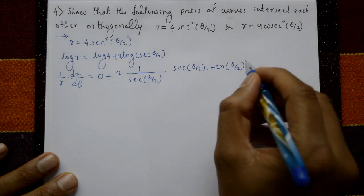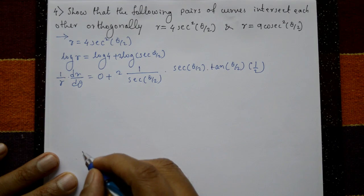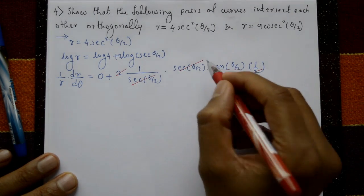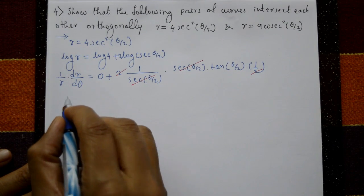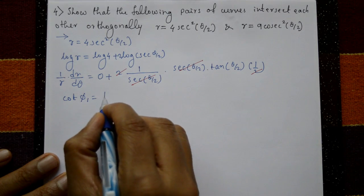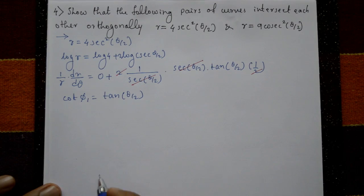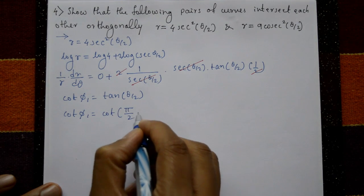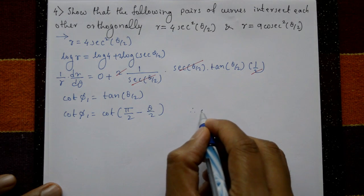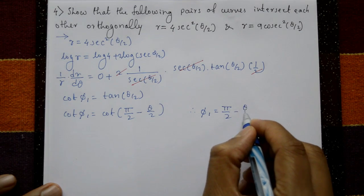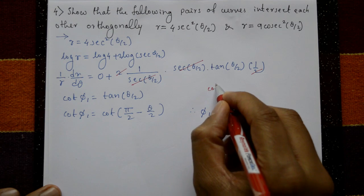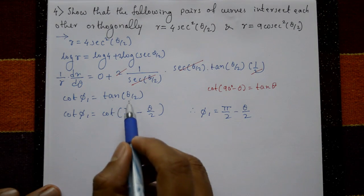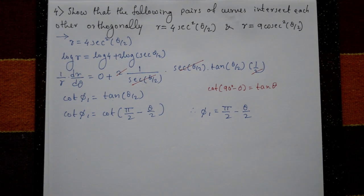The 2's cancel and sec cancels, leaving cot(φ₁) = tan(θ/2). This means cot(φ₁) = cot(90° − θ/2), so φ₁ = π/2 − θ/2, using the identity cot(90° − θ) = tan(θ).